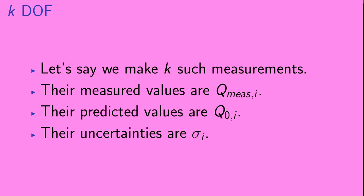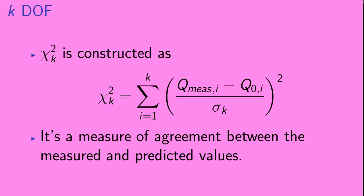Now let's move on to the more general case. We make k measurements, labeled by index i. The measured values are called q-measured-i, their predicted values are q-naught-i, and their uncertainties are sigma-i. To construct our chi-squared, for each measurement we take the difference between the measured and predicted value, divide by the uncertainty, square that, and then sum all of those results. That's our chi-squared — a measure of the agreement between the measured and the predicted values.